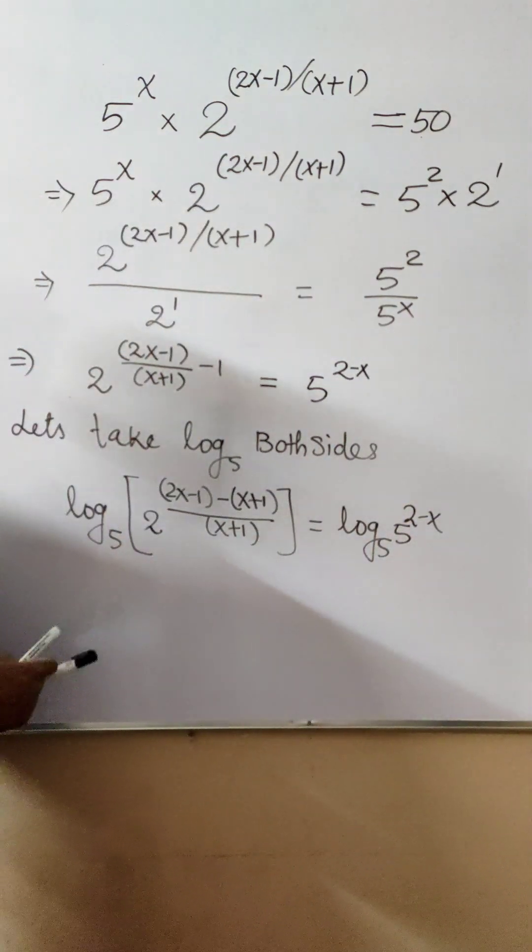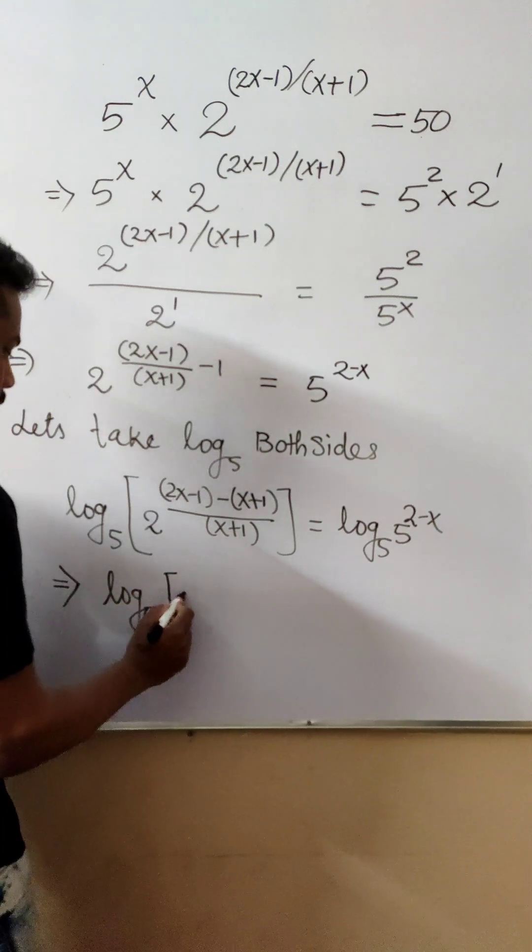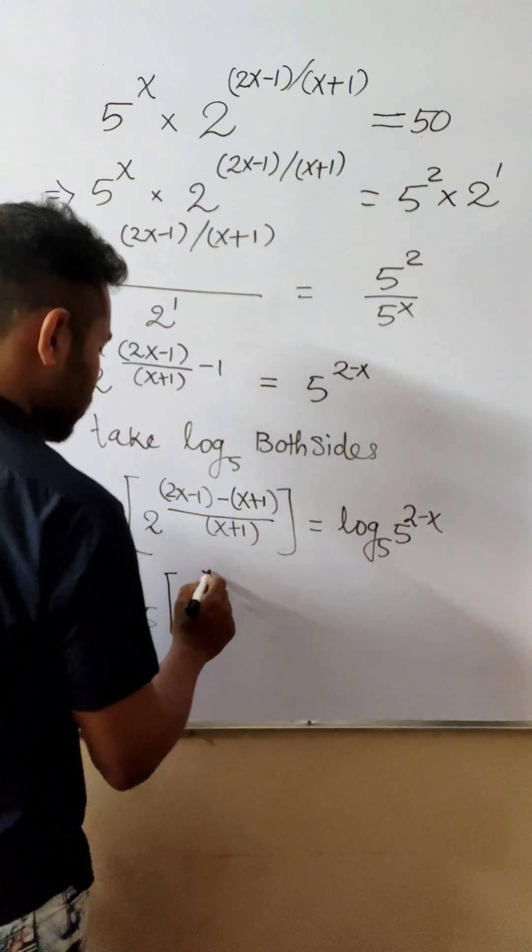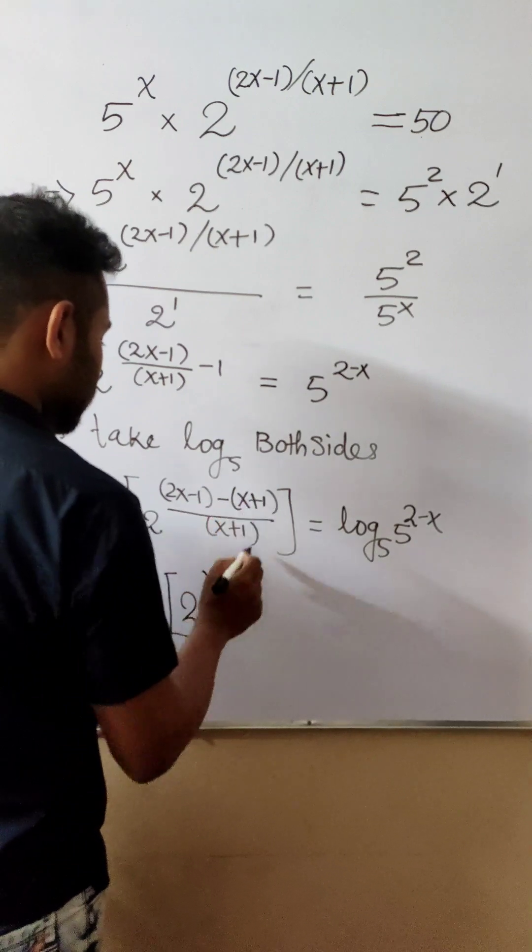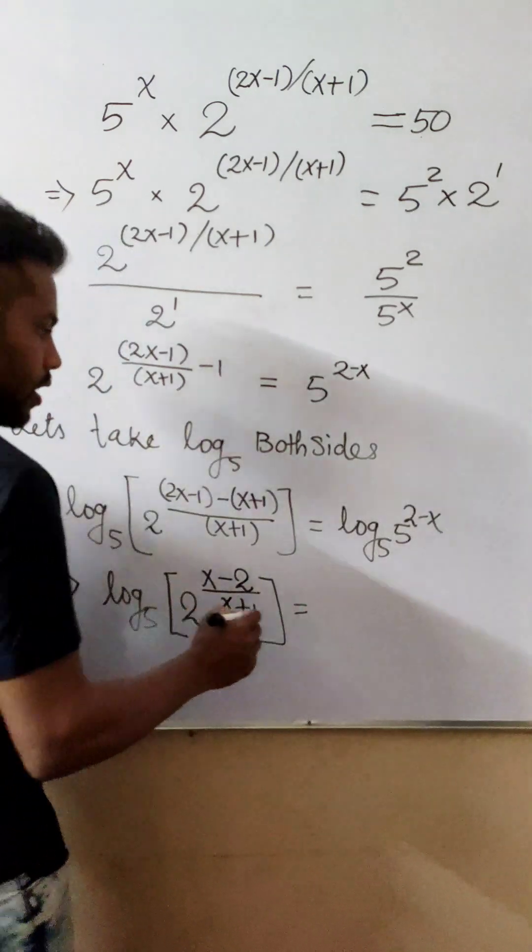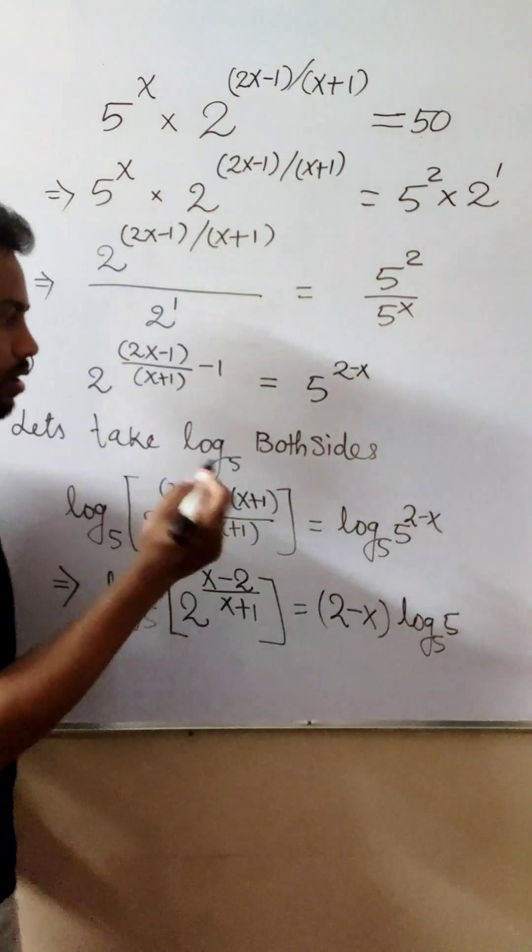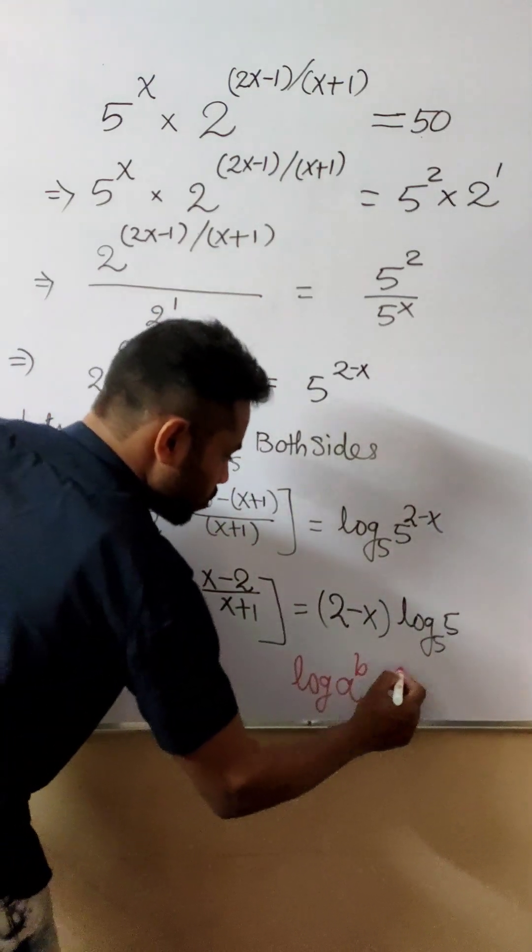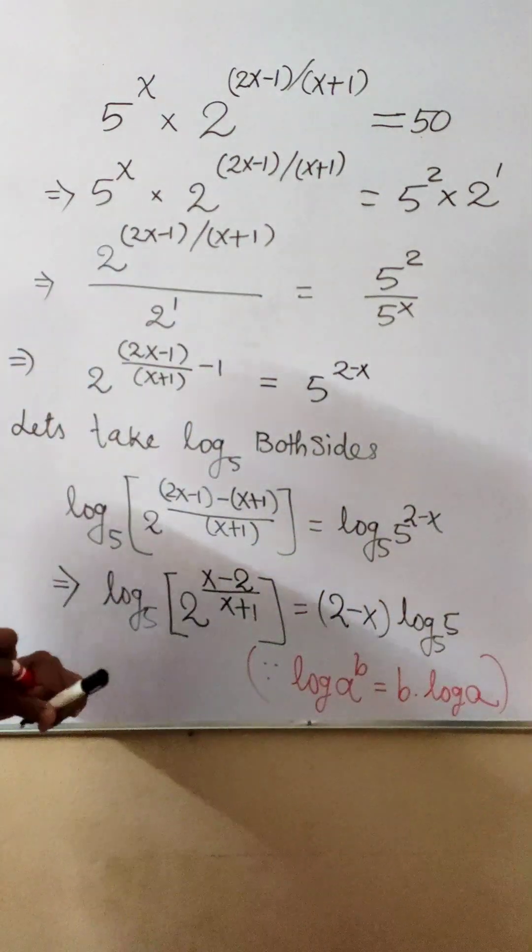This becomes log₅(2^((x-2)/(x+1))) equals (2-x)log₅(5). I used this identity here: if you have log(a^b), then this equals b times log(a). This is the formula we use, so let's continue.